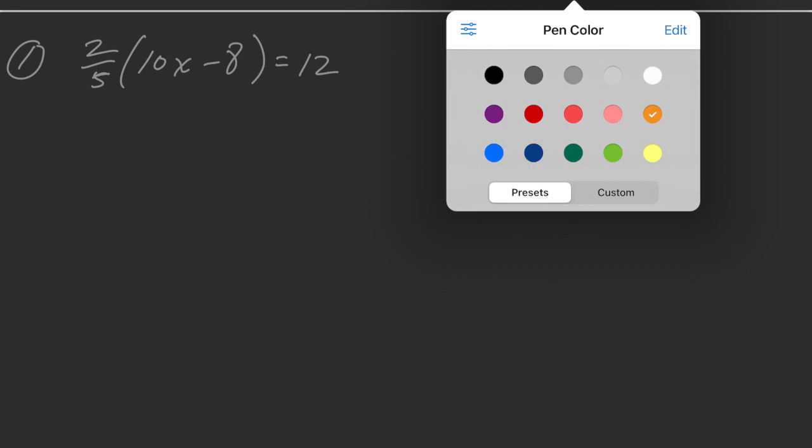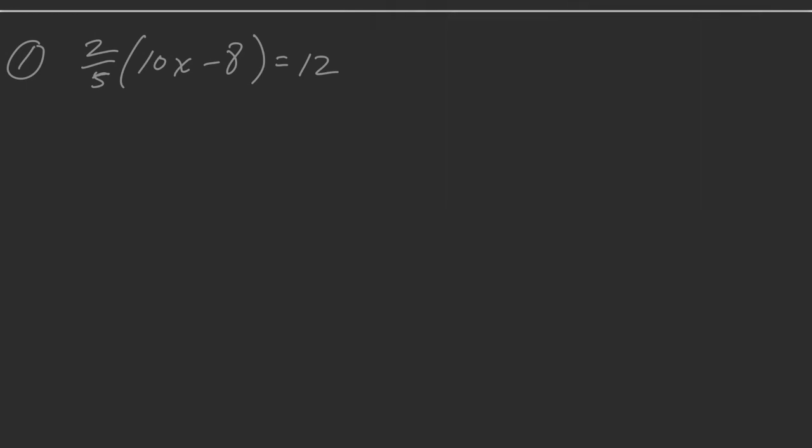The first thing we want to do is simplify the left side and the right side of the equation. Then we can proceed to step two, which is to get the variables and numbers on opposite sides. And lastly, we want to solve for just one variable.